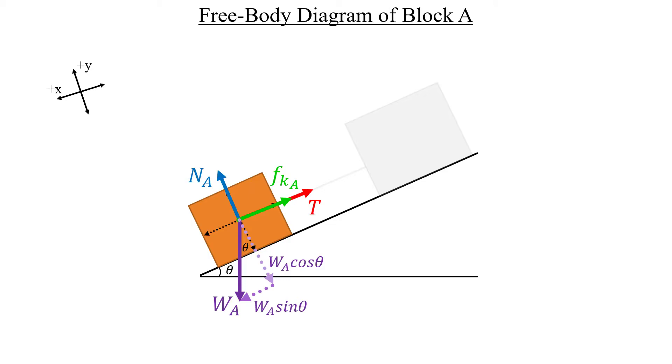So that's all the forces now. So before we move on, let's decompose this weight vector into the cosine and sine components. All that's left is to include an acceleration vector off to the side to indicate that the block is moving down the ramp, and that is it.